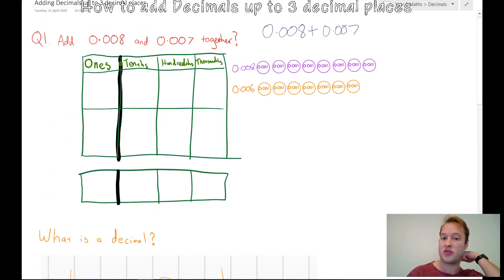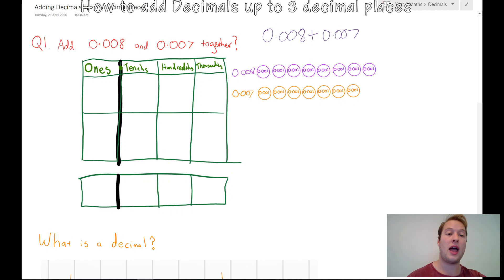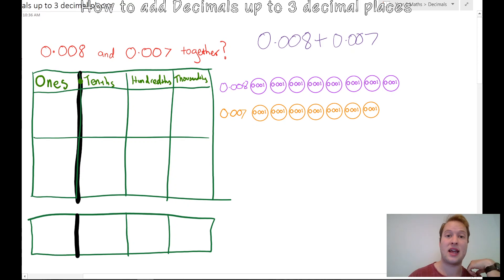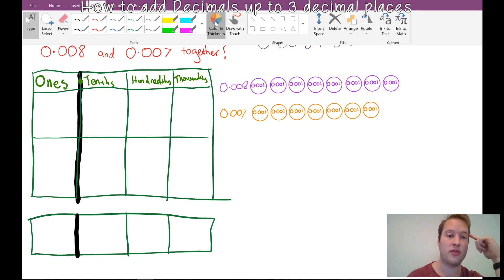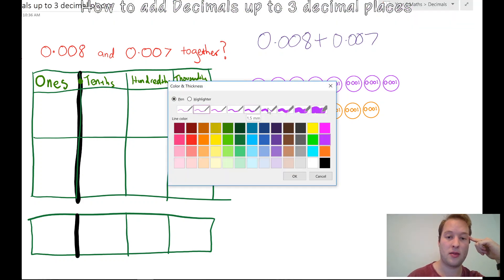Let's go to the actual question. My question is, add 0.008 with 0.007. I'm putting them together. I'm going to represent it in color. My 8 is going to be in purple. You can see I've got 8 discs that are all worth 0.001. And then I've got 7 orange discs that are all worth 0.001.